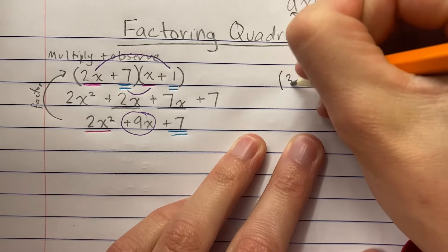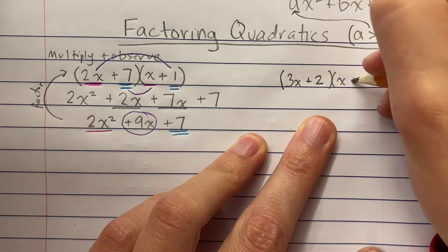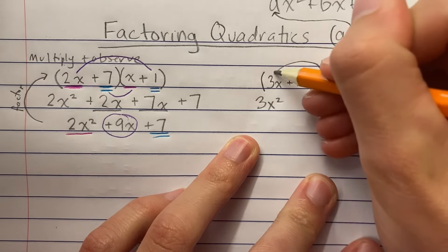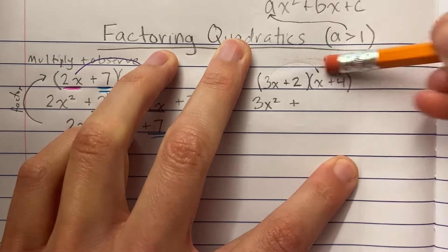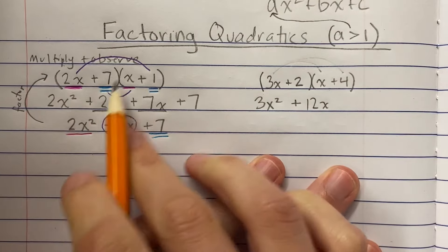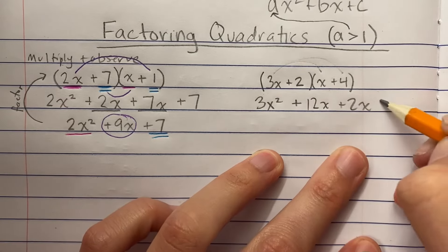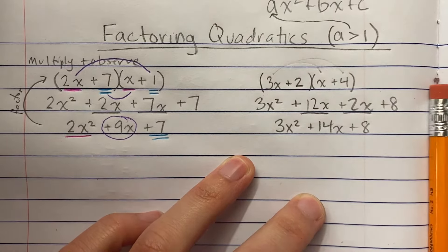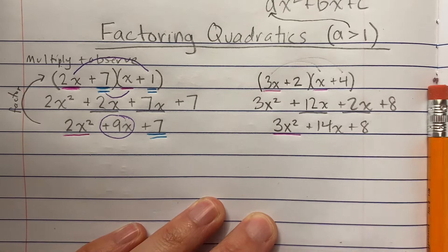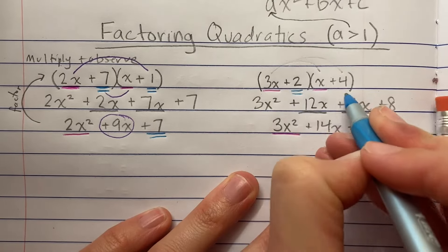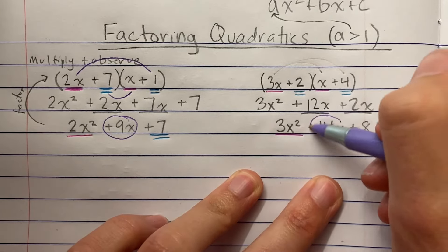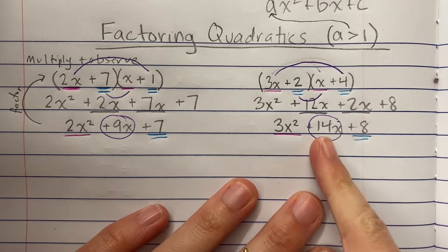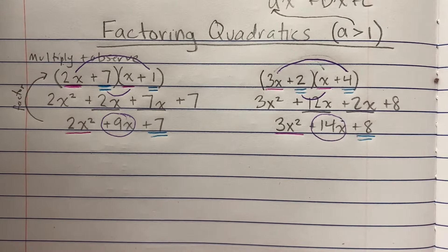Let's observe one more multiplication before doing it in reverse. Multiplying (3x+2)(x+4): 3x times x is 3x², 3x times 4 is 12x, 2 times x is 2x, and 2 times 4 is 8. Combining like terms gives 3x²+14x+8. Again, the 3x² came from 3x times x, the 8 came from 2 times 4, and that middle term 14x came from 12x plus 2x.